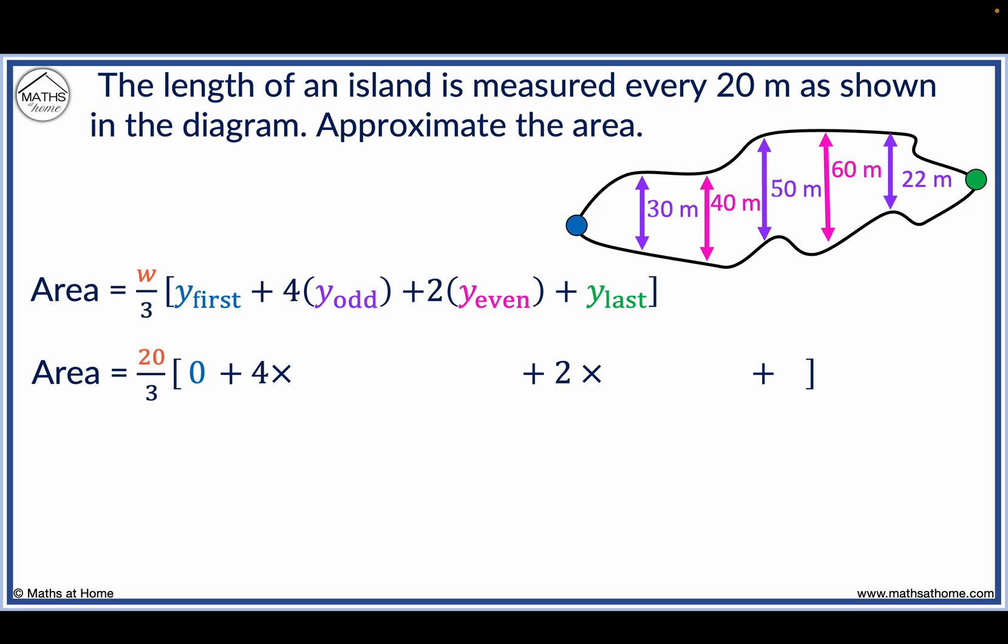The Y odd measurements are 30 plus 50 plus 22. The Y even measurements are 40 plus 60. Similarly, the Y last measurement is also 0.